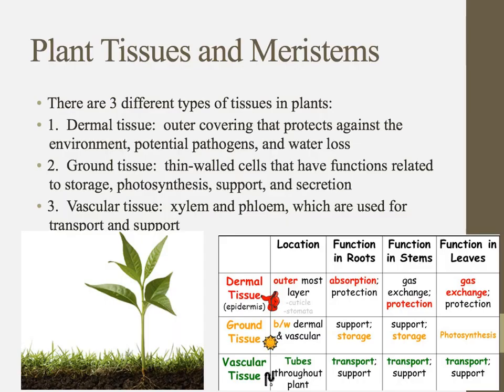Welcome to the video for chapter 9.3, growth in plants. Before we really talk about growth, it's worth our time to go back and think about what kinds of tissues we have in plants. The first kind is called dermal tissue — dermal, just like your dermis, which is a fancy word for skin. If you think about your dermatologist, your skin doctor, that gives a little insight into what dermal tissue is: it's the outer covering there to protect the plant.